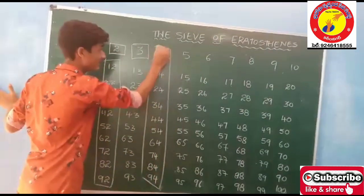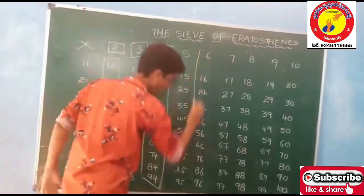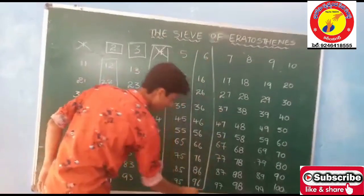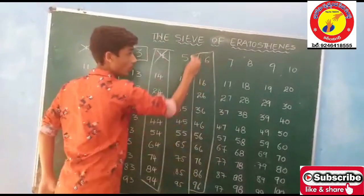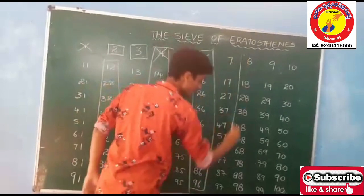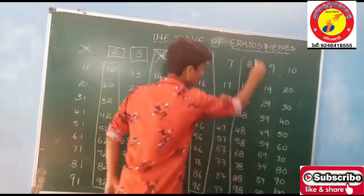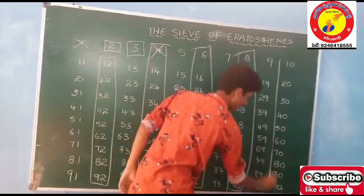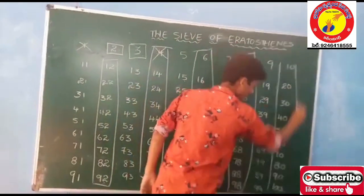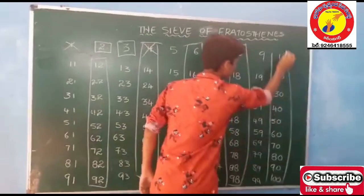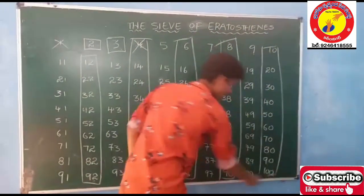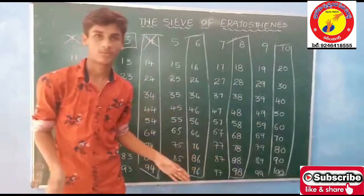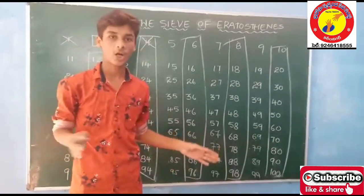So this is the easy method to find prime numbers. Even if you don't know the prime numbers, you may find them through this method. This is a very simple method. So all these even numbers are not prime numbers — they are all composite numbers.